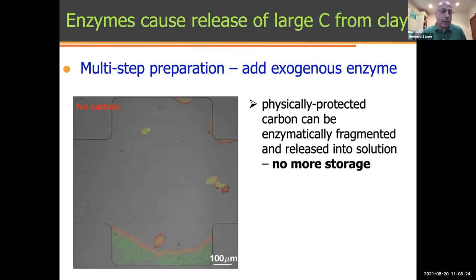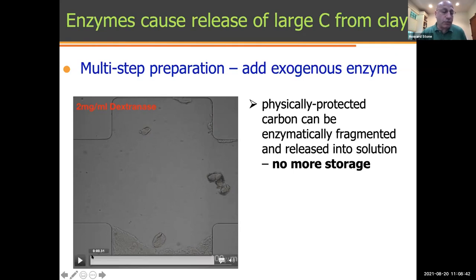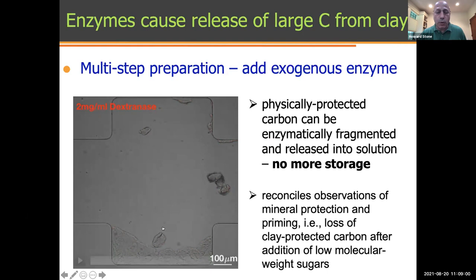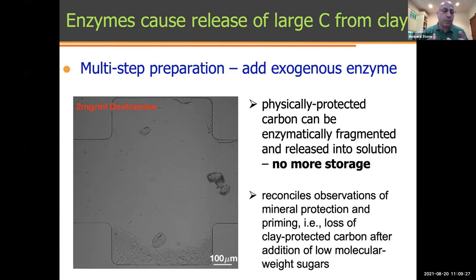The experiment goes like this: you first prepare by adding in different molecules that absorb into the clay, then flush with water. Red is a higher molecular weight molecule that doesn't get flushed out. Now you add the enzyme — a small molecule that rapidly gets into the clay and breaks down these higher molecular weight molecules, releasing them back into the water. This movie demonstrates that enzymes produced outside the bacteria are capable of releasing large molecular weight compounds that would otherwise be trapped in soil. In the literature there are observations referred to as priming, where the presence of small molecule sugars leads to excess carbon being released from the system.